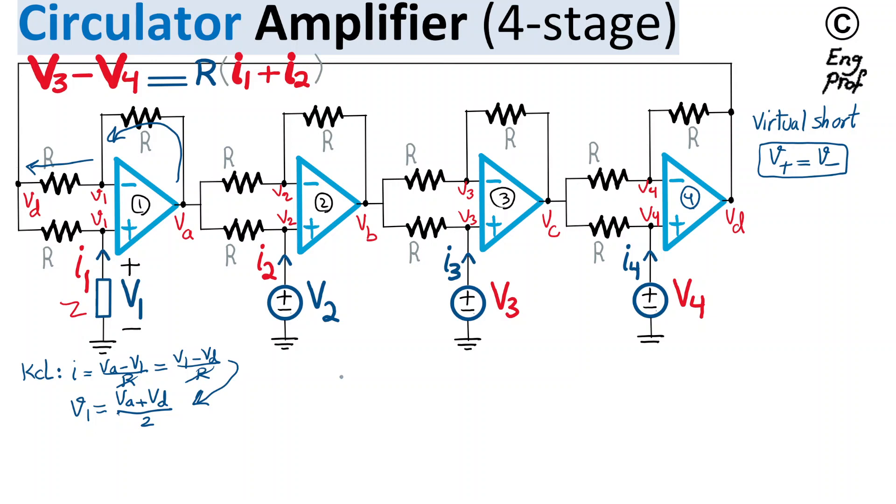We can do the same thing for the second stage, which is this stage, meaning that I can say V2, which appears here, is midway between VB and VA. So therefore I can say V2 is VB plus VA divided by 2. And then V3 is VC plus VB divided by 2, and V4 is VD plus VC divided by 2. So let's refer to these as equations 1, 2, 3, and 4.